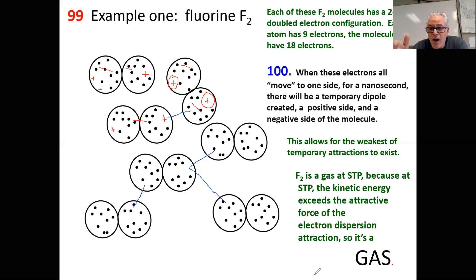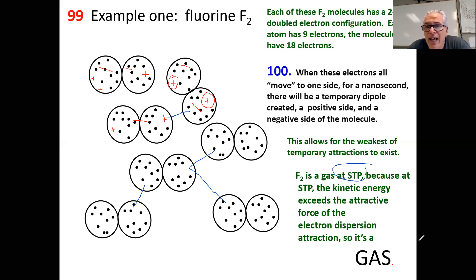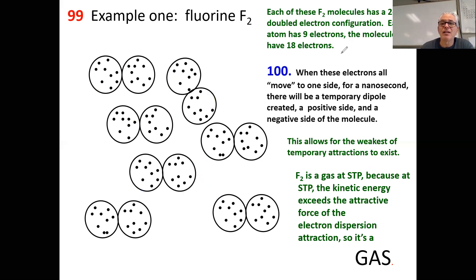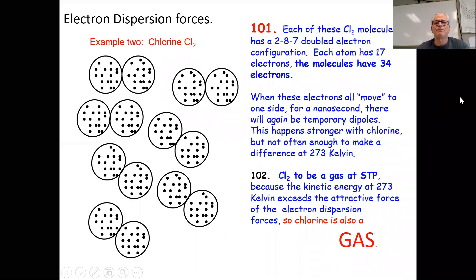It makes the molecules slightly attracted to each other — it's not zero. But if we consider fluorine at standard temperature and pressure, at 273 Kelvin and normal pressure, fluorine is a gas. This attraction doesn't seem to have much effect. It's not zero, but fluorine, which is in group 17, is a gas. The next molecule in group 17 is chlorine.